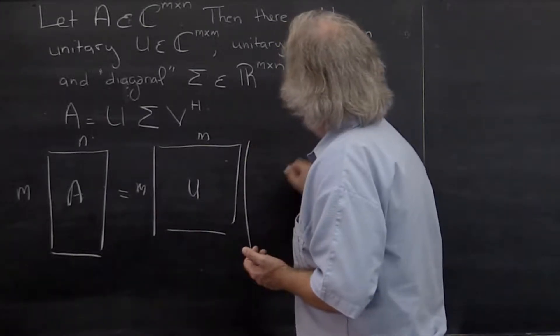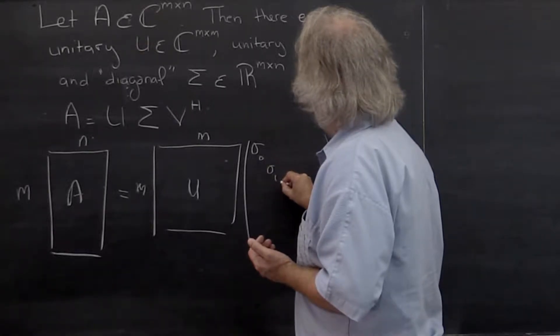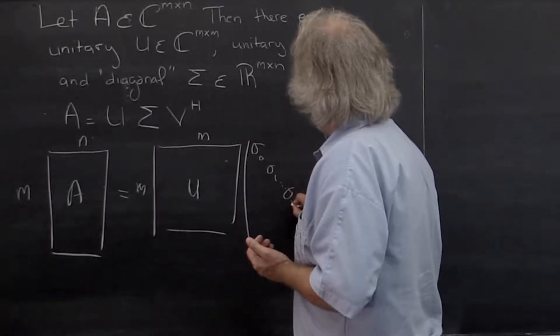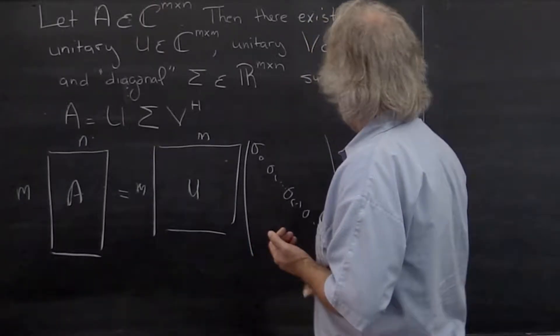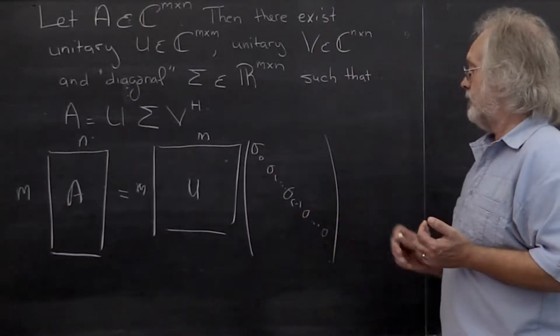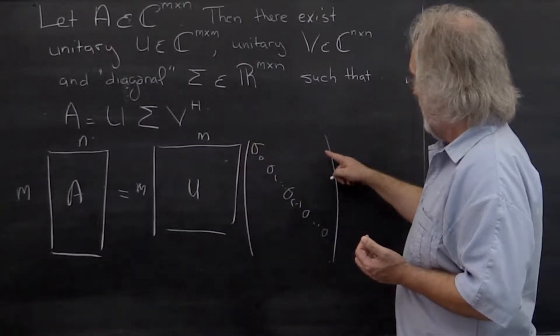And then you end up with a diagonal matrix. And let's show the entries in that matrix: sigma zero, sigma one, up to some number sigma r minus one. And then afterwards you get zeros. And everything off the diagonal is zero. This is the main diagonal. And notice that this has to be m by n.